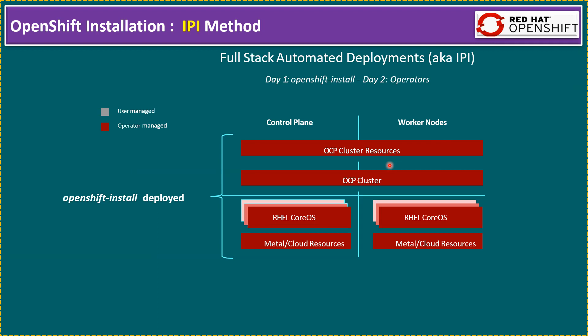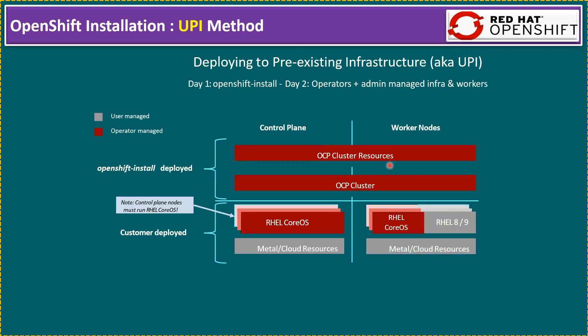The key point in IPI is there is no manual intervention. Once we initiate the OpenShift install deploy command, it will automatically start provisioning three master nodes and three worker nodes. Initially it will create one image, and using that image it will first deploy the bootstrap node. Using the bootstrap node, it will deploy the control plane and worker node VMs. Once provisioning is completed, this bootstrap node is temporary — it will automatically be destroyed once the control plane and worker node deployment is completed.